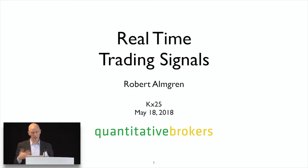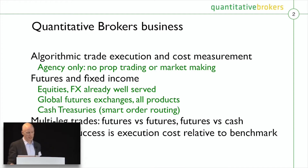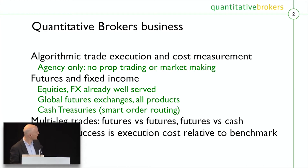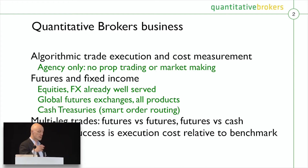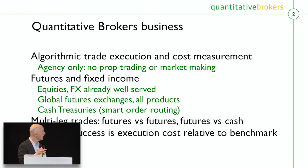Quick bit of background so you have a sense of who we are. What our company does — Quantitative Brokers — we're an algorithmic execution broker. We do algorithmic trade execution and transaction cost measurement. We're not prop trading. We don't do any market making. We only execute on behalf of clients.